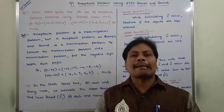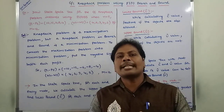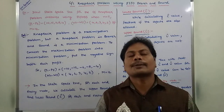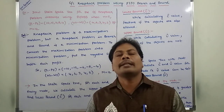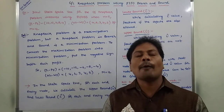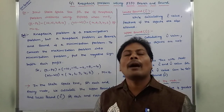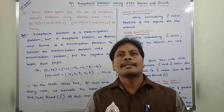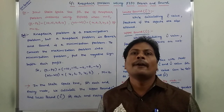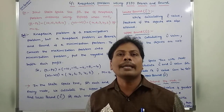The problem can be solved by constructing the state space tree. In that state space tree, there are some types of nodes: the first is a live node, the second is an E-node, and the third is a dead node. For each and every node, we have to calculate two bound values: one is the C-cap value (lower bound) and another is the U-cap value (upper bound).